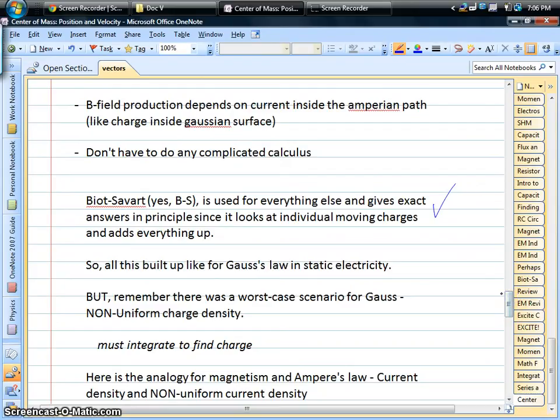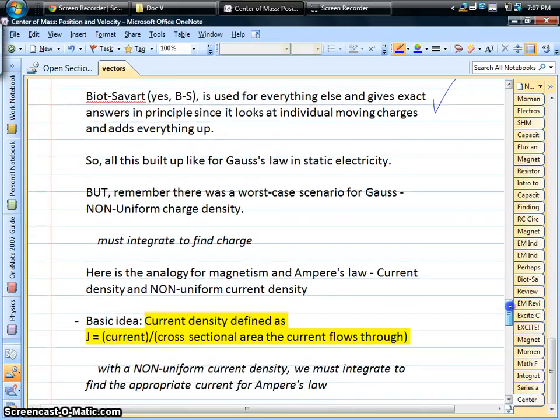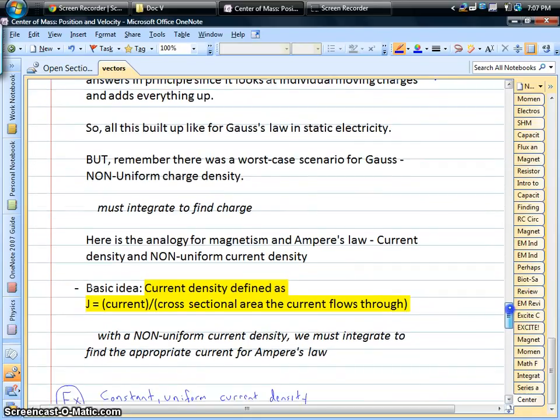And those will give us supposedly exact answers if we're able to do the math. So as we did with Gauss's law, we built all this up, and then we finally got into the worst-case scenario for Gauss, which is the non-uniform densities. And we knew that we had to do an extra level of integration to find the charge once we knew what the function was of the charge density. That's going to be kind of the case here for Ampere's law. The worst-case scenario for Ampere's law is this thing called a non-uniform current density.